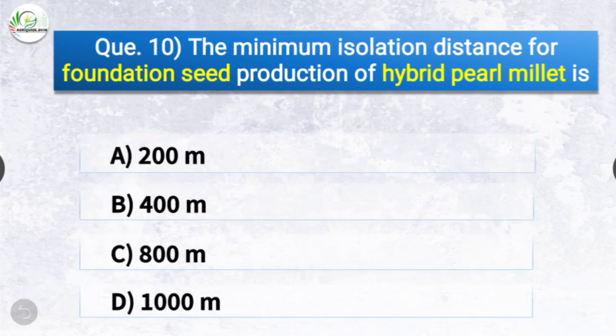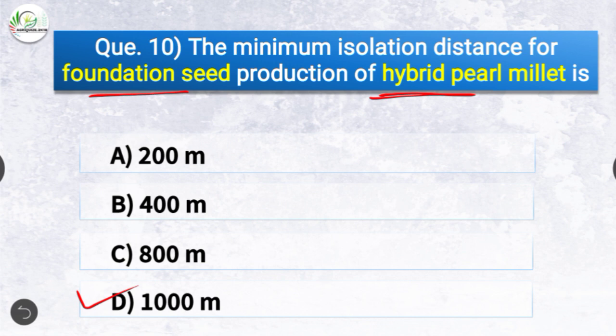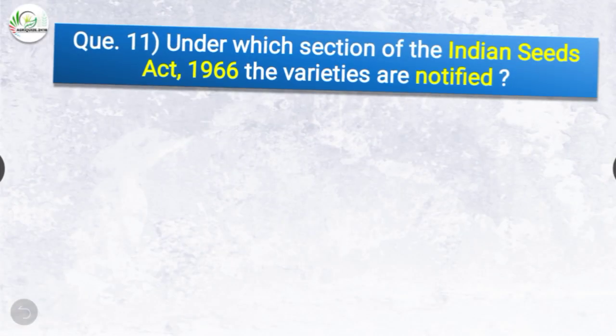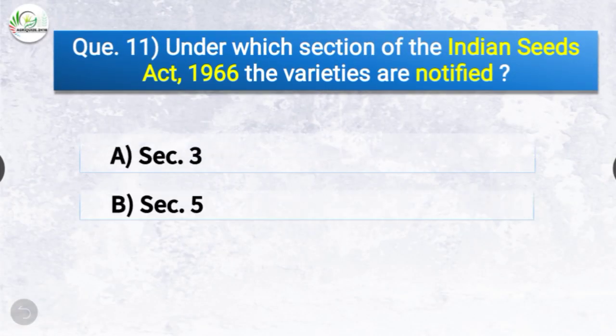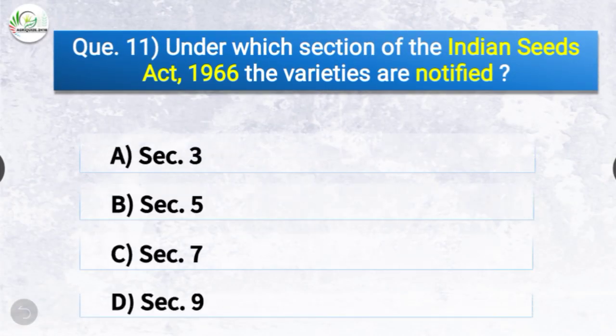Question number ten: The minimum isolation distance for foundation seed production of hybrid pearl millet — the options are 200m, 400m, 800m, or 1000m. The correct answer is option D — 1000m. The minimum isolation distance for foundation seed production of hybrid pearl millet is 1000m.